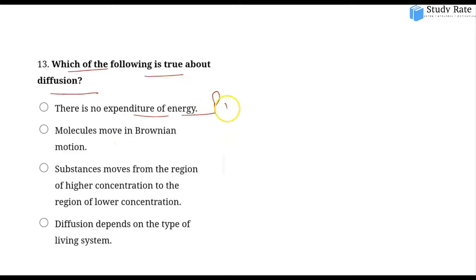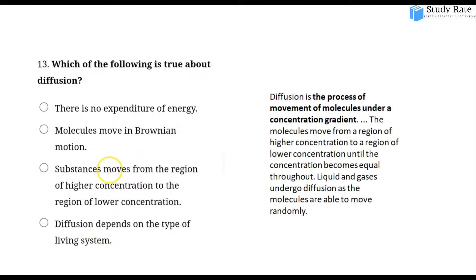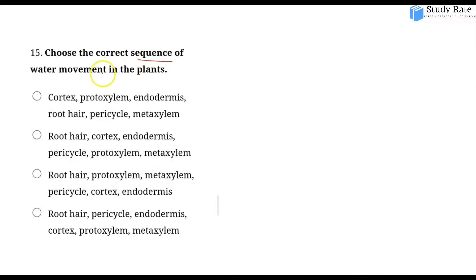Diffusion is a passive process with minimal energy involved. Substances move from a region of high concentration to a region of low concentration. This movement continues until concentration becomes equal throughout. Both liquids and gases undergo diffusion, and molecules are able to move randomly.